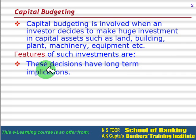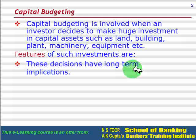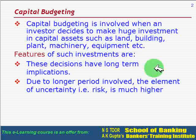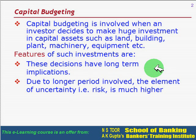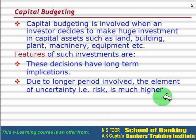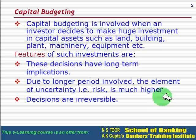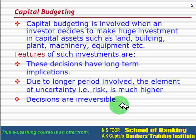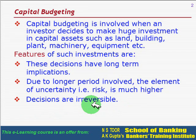Features of these huge investments include the following. Capital budgeting decisions have long-term implications — this investment is not for one day, one month, or one year; it is for years together. Since the time period involved is long, the element of uncertainty, that is risk, is also much higher. These decisions cannot be reversed, and if at all they are reversed, the cost is very high.